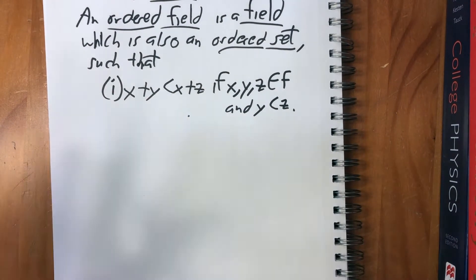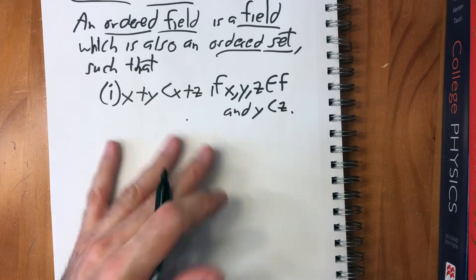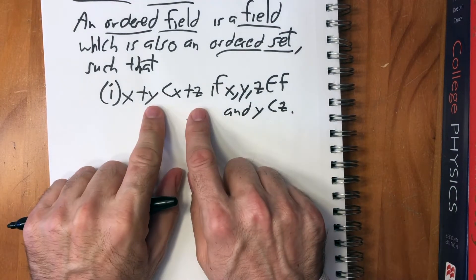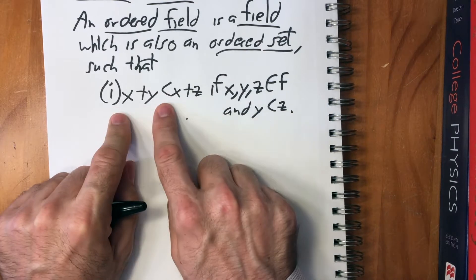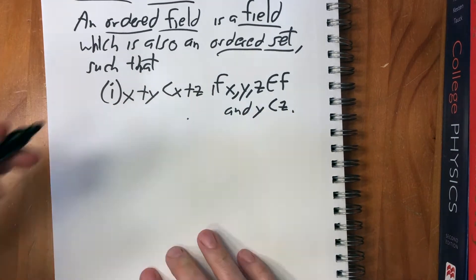So again, as with all the axioms for fields, this is something that we all know from grade school, that if you have two numbers, one is less than the other, and you add the same thing to both sides, the equality doesn't change. Then x plus y will be less than x plus z.